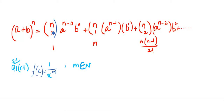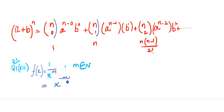The b power will be nc0, nc1, and so on — following the binomial pattern. We will solve these questions. First of all, I will note that this function 1/x^m can be written as x raised to power negative m. I suppose this function is y — we call this equation number 1.